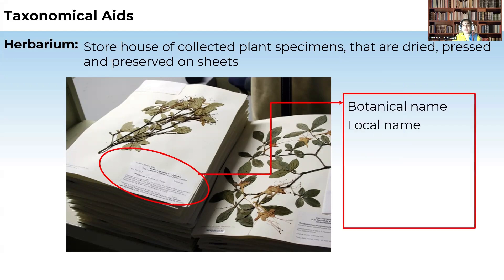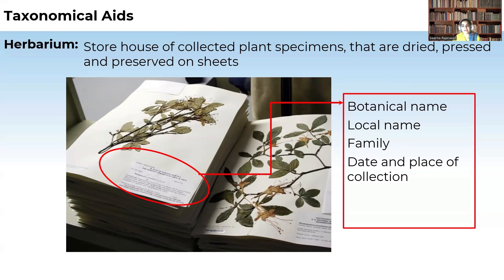From a herbarium, we can know the name of the plant, the local name, which family it belongs to, when it was collected, the date and the place where it was collected, and who collected it. Likewise, we can see a variety of plants and animals which we do not see in our day-to-day life — we can find them in herbariums.